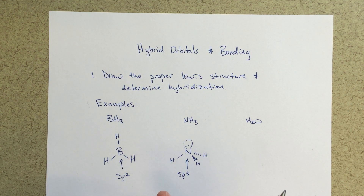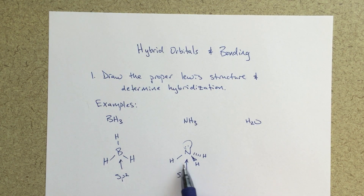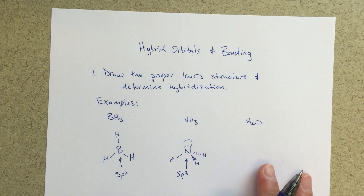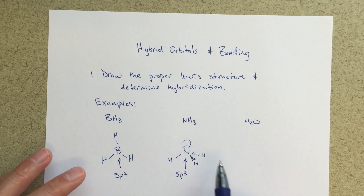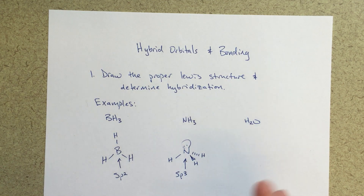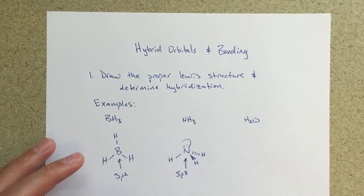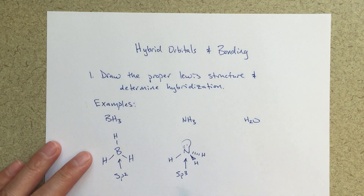That sp3 hybridization is based on the tetrahedral arrangement and the bond angles. If I look at the H-to-H angle, that's going to be about 109.5 degrees. There'll be a slight effect from the lone pair, but for our purposes we'll say about 109.5 degrees, which indicates sp3 hybridization.